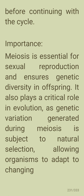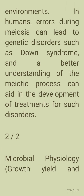Meiosis is essential for sexual reproduction and ensures genetic diversity in offspring. It also plays a critical role in evolution, as the genetic variation generated during meiosis is subjected to natural selection, allowing organisms to adapt to changing environments. In humans, errors during meiosis can lead to genetic disorders such as Down syndrome, and a better understanding of the meiotic process can aid in developing treatments for such disorders.